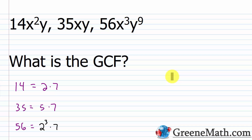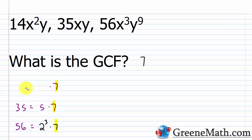Don't get confused with the least common multiple. When you're looking for the GCF, it's got to be common to everything. So I have a 7 that's common to everything — that's what's going to be the greatest common factor, at least for the number parts. If I had 14, 35, and 56 and asked what's the greatest common factor, it would be 7.